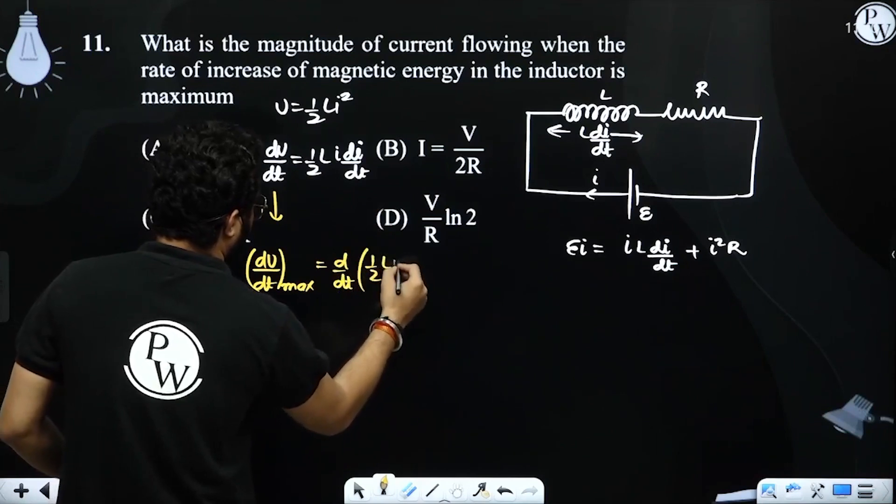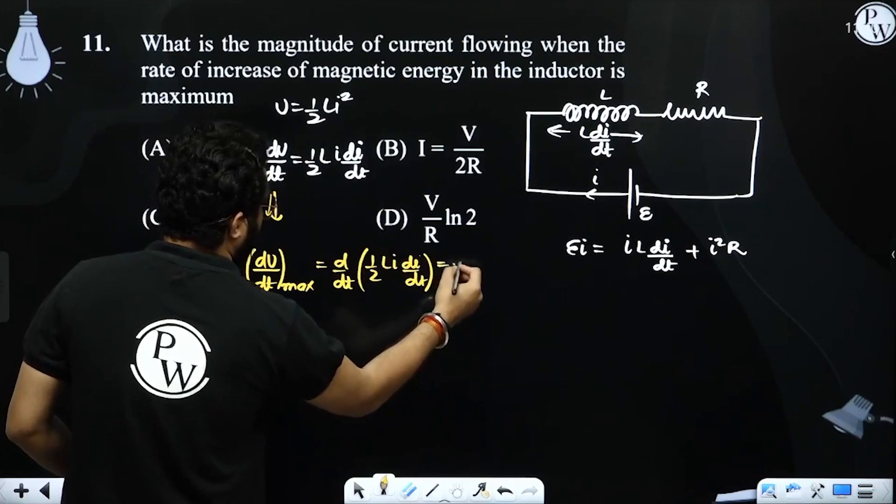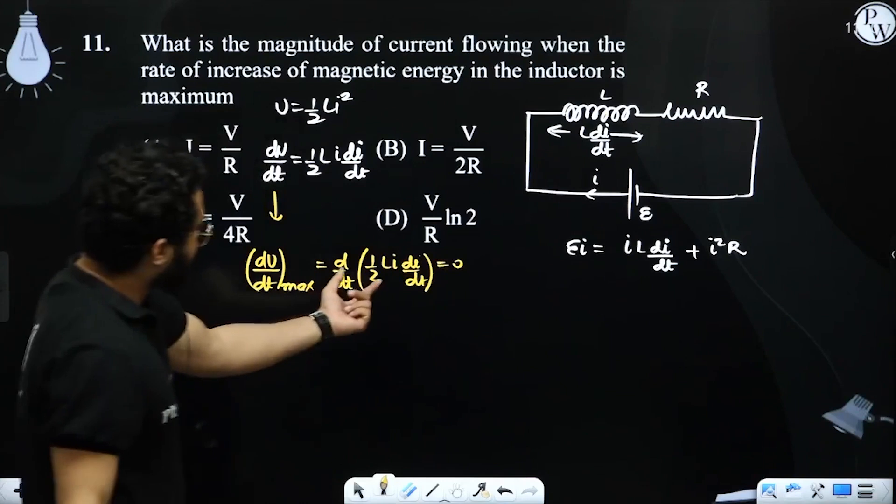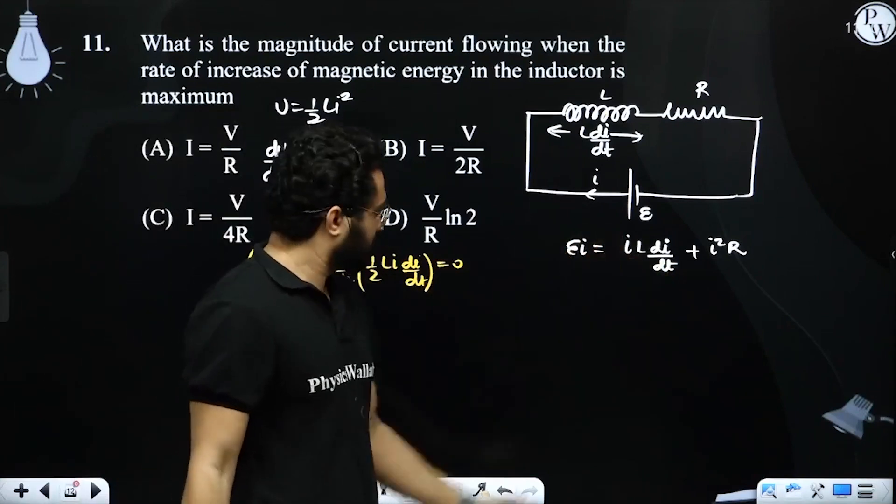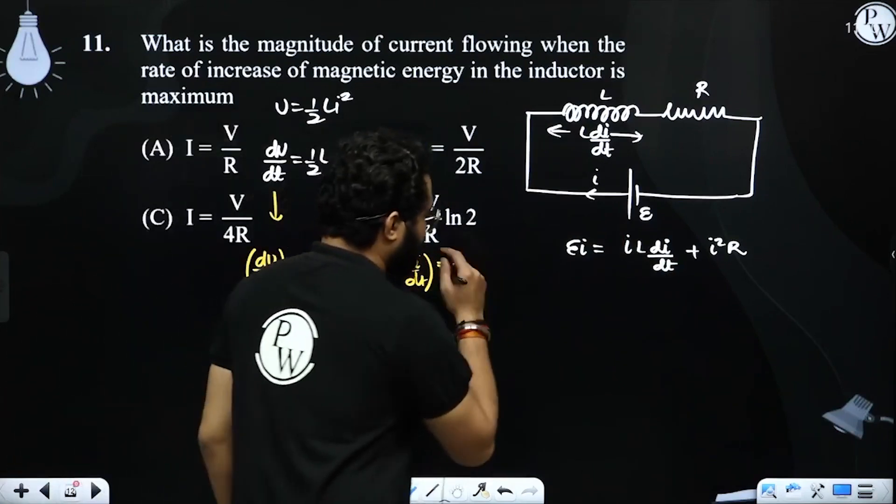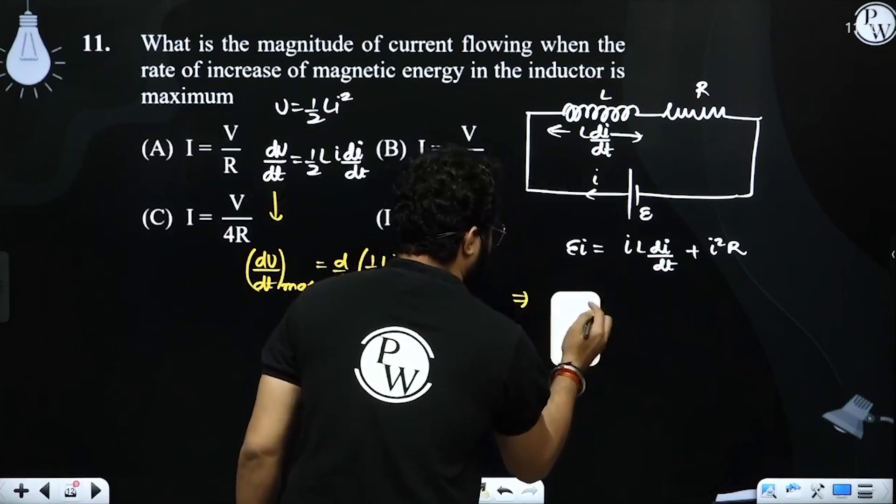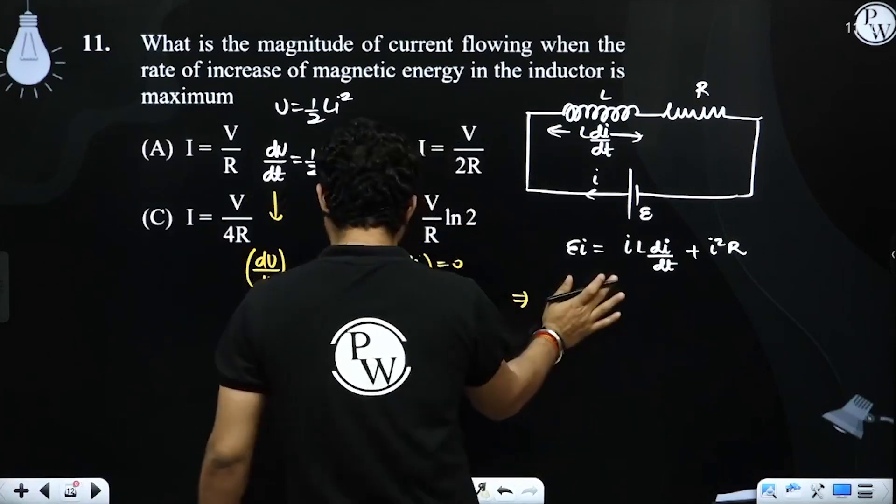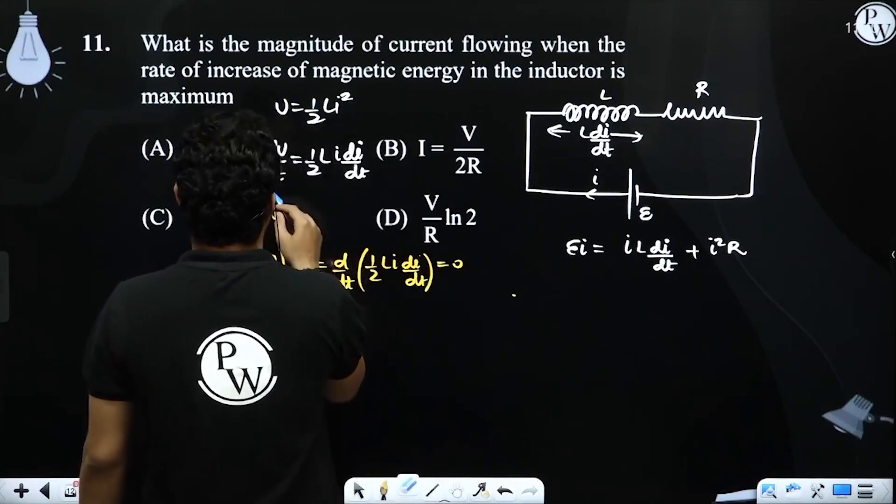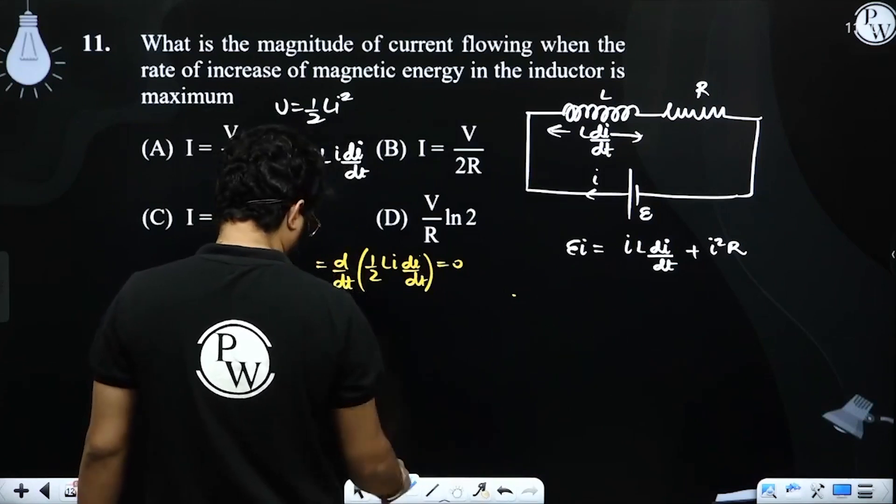Half L I, di by dt - this should be what? It should become zero. And see, I have this exact term here, right? So if I differentiate both sides, then the L i di by dt term will also form. So let's differentiate. E... And with respect to current we'll do it, because we need the value of current.